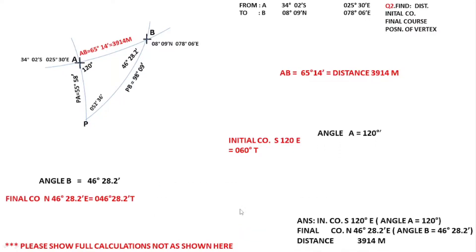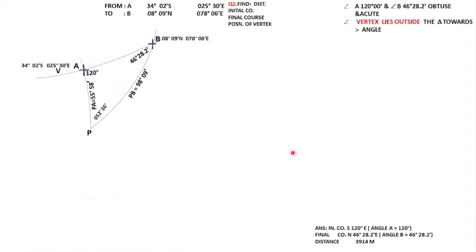We have got angle A, angle B, and angle C. I took up this example to show you that in this case one angle is more than 90 degrees — one is acute and one is obtuse. In the previous case both were acute, so the vertex was lying inside the triangle. If you have a situation where one angle is acute and one is obtuse, the vertex lies on the side of the greater angle, outside the triangle — towards the obtuse angle, something like this.